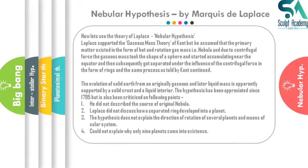Second, Laplace did not discuss how a separated ring developed into a planet. A ring separated from the rotating mass due to centrifugal force, but how these rings converted into solid spherical planets was not discussed. Third, the hypothesis does not explain the direction of rotation of several planets and moons of the solar system, and it could not explain why only nine planets came into existence.